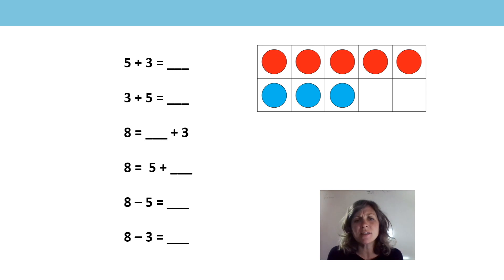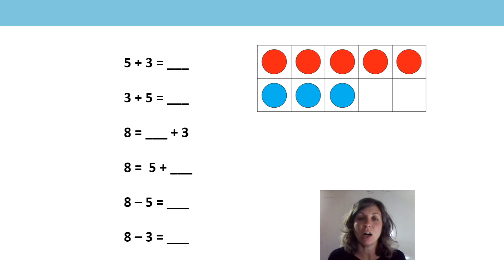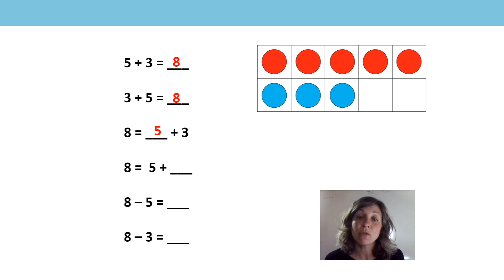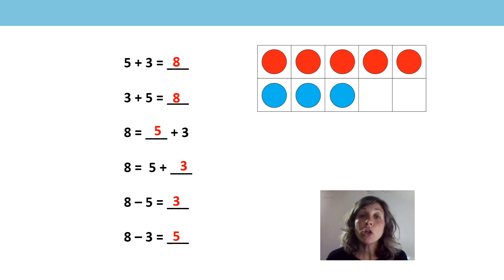Let's see if we can say them really quickly together — we're going to say the whole equation including the missing number. Are you ready? 5 plus 3 is equal to 8. 3 plus 5 is equal to 8. 8 is equal to 5 plus 3. 8 minus 5 is equal to 3. 8 minus 3 is equal to 5. You can pause the video and have a look at all these equations and see how they are all linked.